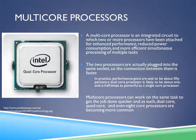Multi-core processors can work on the same tasks to get the job done quicker, and as such, dual-core, quad-core, and even 8-core processors are becoming more common. As you can see in the picture to the left, this is a picture of an Intel quad-core processor.